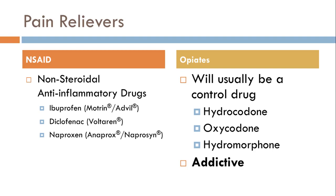On the right side we have opiates, sometimes called opioids. These are controlled substances with higher addictive and abuse potential. Examples include hydrocodone, oxycodone, and hydromorphone. You can notice the 'codone' ending, which indicates a derivative of codeine originating from the opium plant. Watch out for all the issues that come with addictive medications — it can be quite troublesome for you as a technician.